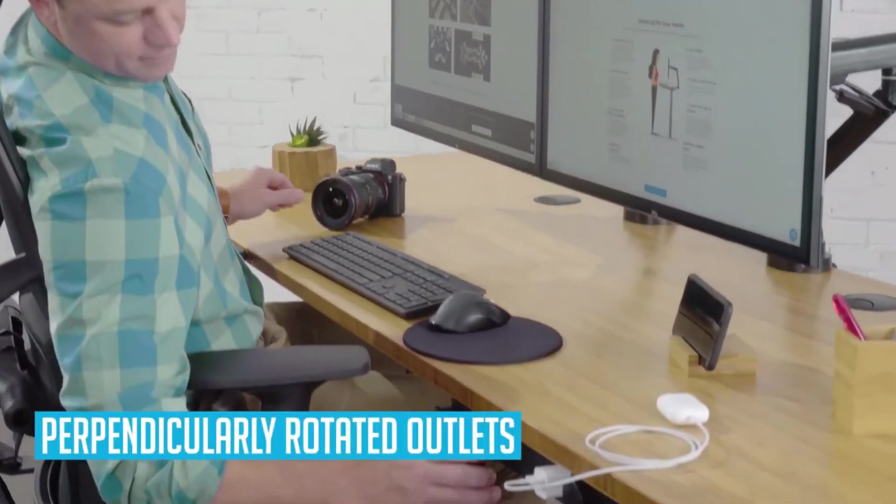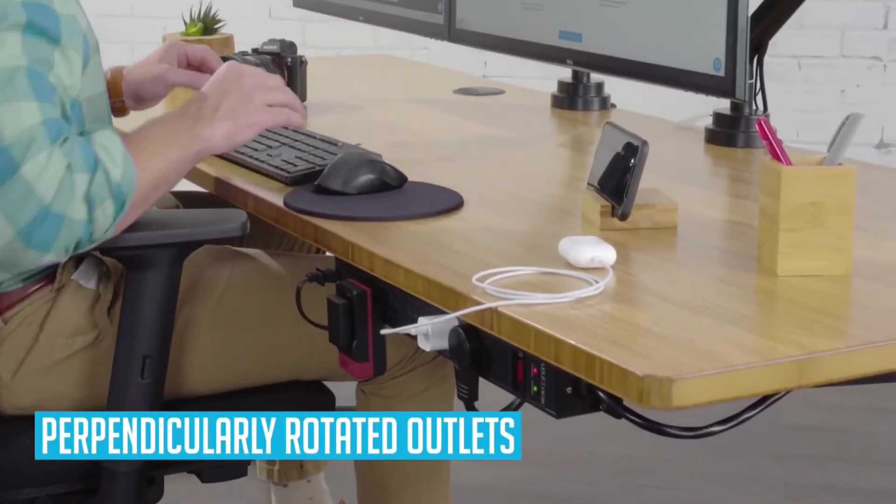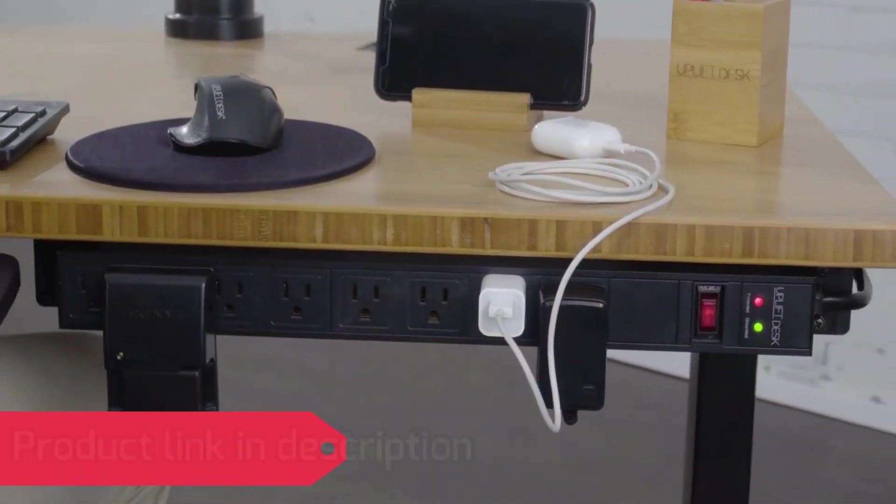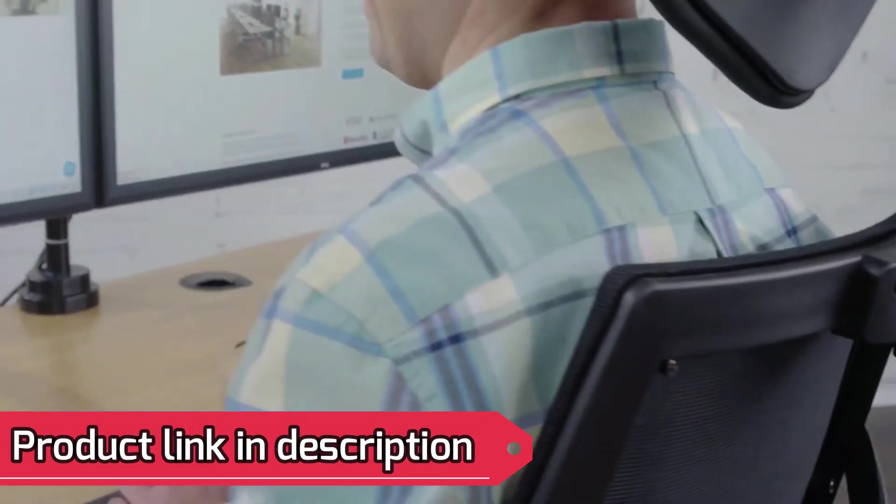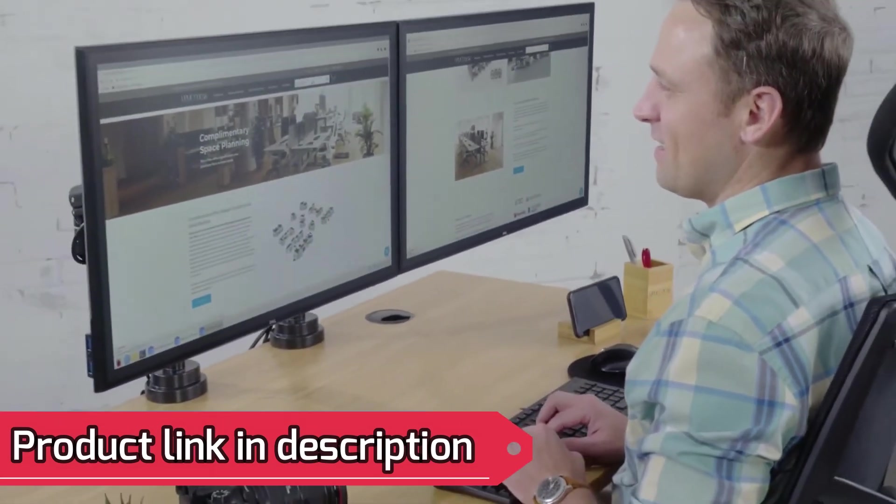The 8 Outlet Surge Protector accommodates large or bulky adapters with outlets rotated perpendicular to the surge protector's length. The surge protector comes equipped with a heavy-duty 15-foot power cord to allow you to reach any wall outlet.